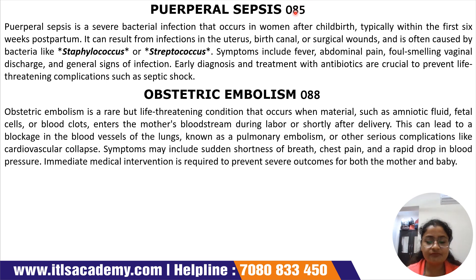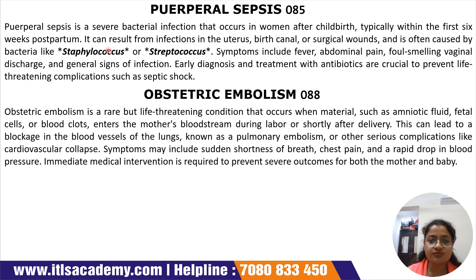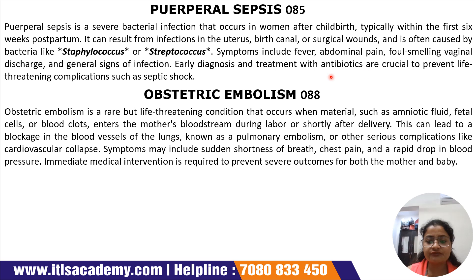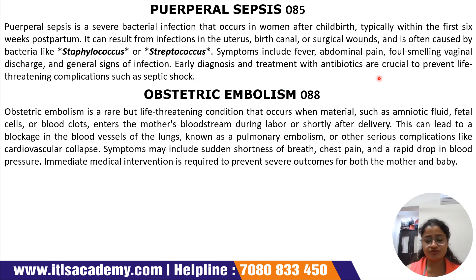Puerperal sepsis, O85, is a severe bacterial infection occurring in women after childbirth, typically within the first six weeks postpartum. It can result from infections in the uterus, birth canal, or surgical wounds, often caused by bacteria like Staphylococcus or Streptococcus. Symptoms include fever, abdominal pain, foul-smelling vaginal discharge, and general signs of infection. Early diagnosis and treatment with antibiotics are crucial to prevent life-threatening complications such as septic shock.